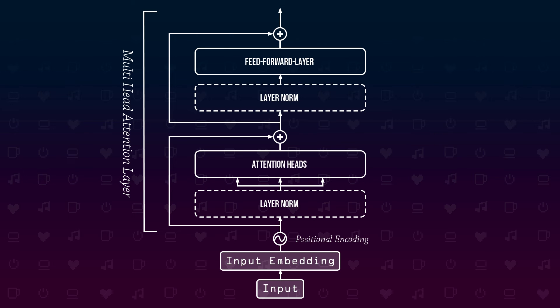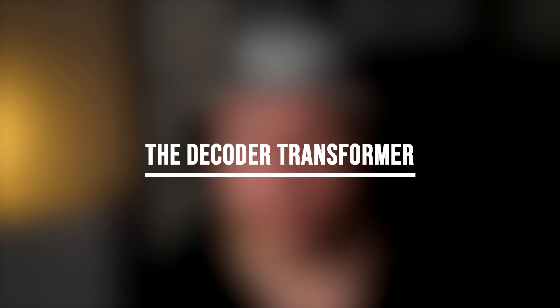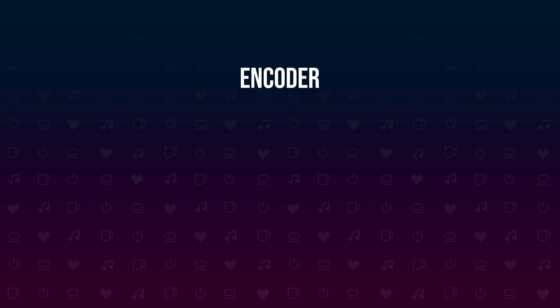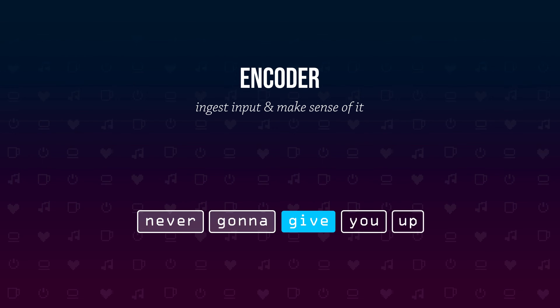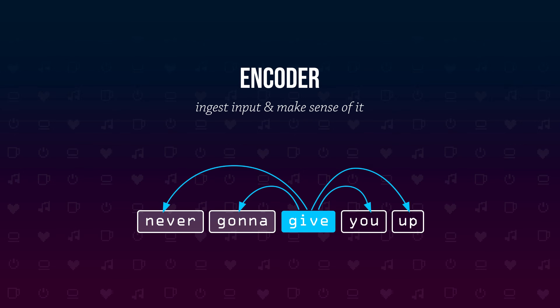This can be stacked a couple of times, giving us an encoder. Now that we know how an encoder is constructed, let's have a look at the decoder. The good news is that encoder and decoder are almost identical — there's just one slight difference. An encoder is used to ingest all of the input and make sense of it; it needs to pay attention to all the tokens at once, so the attention heads search for patterns in all directions.